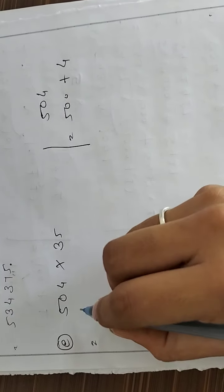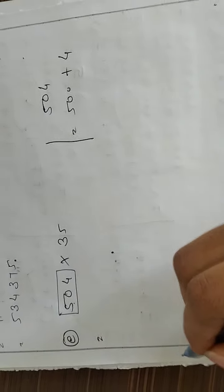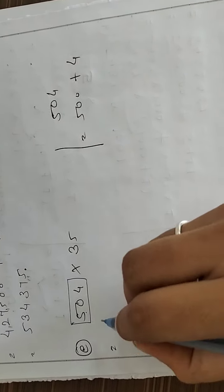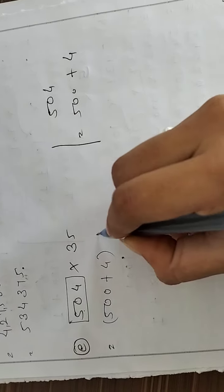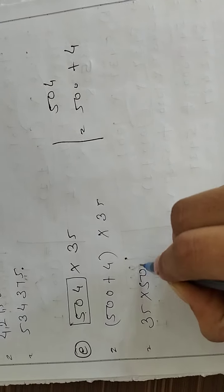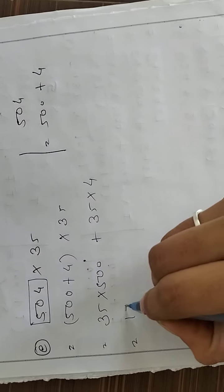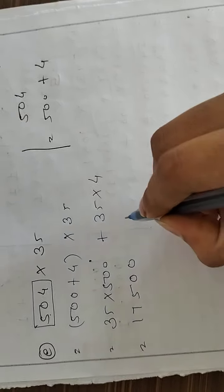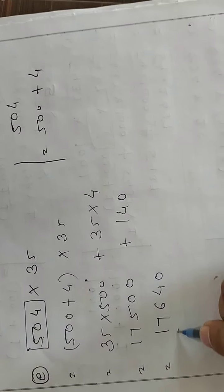Question E: 504 into 35. बड़ा नंबर कौन सा है? 504। तो 500 plus 4, into 35। 35 को 500 से multiply करो और 35 को 4 से multiply करो। Answer: 17,500 plus 140 = 17,640।